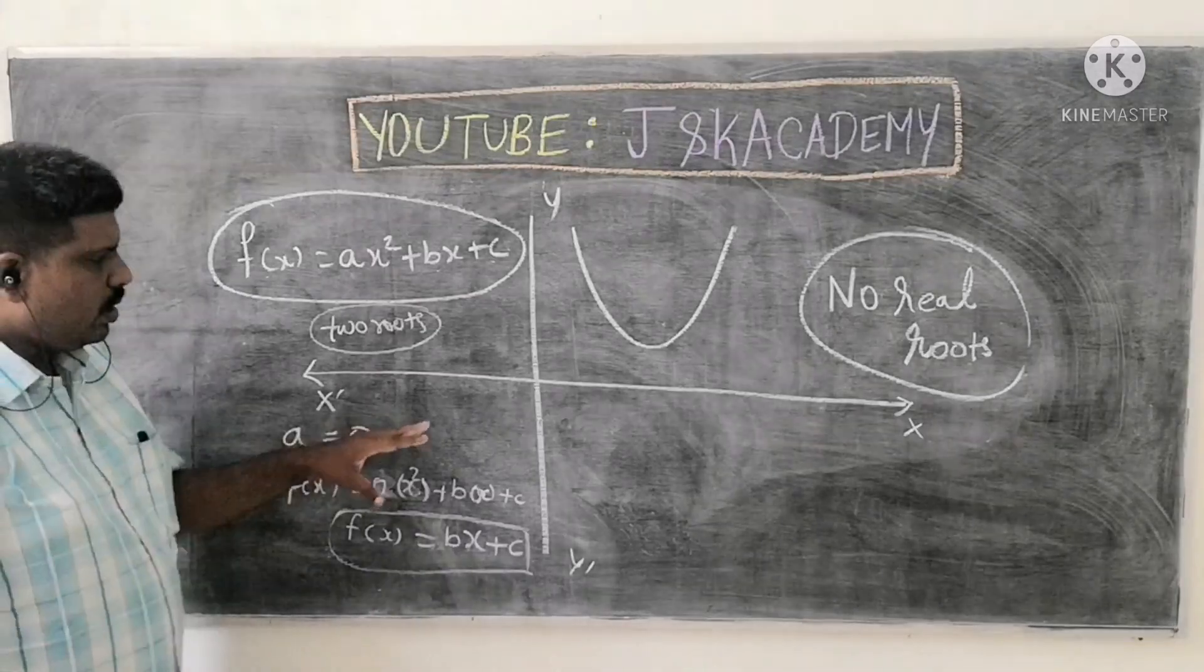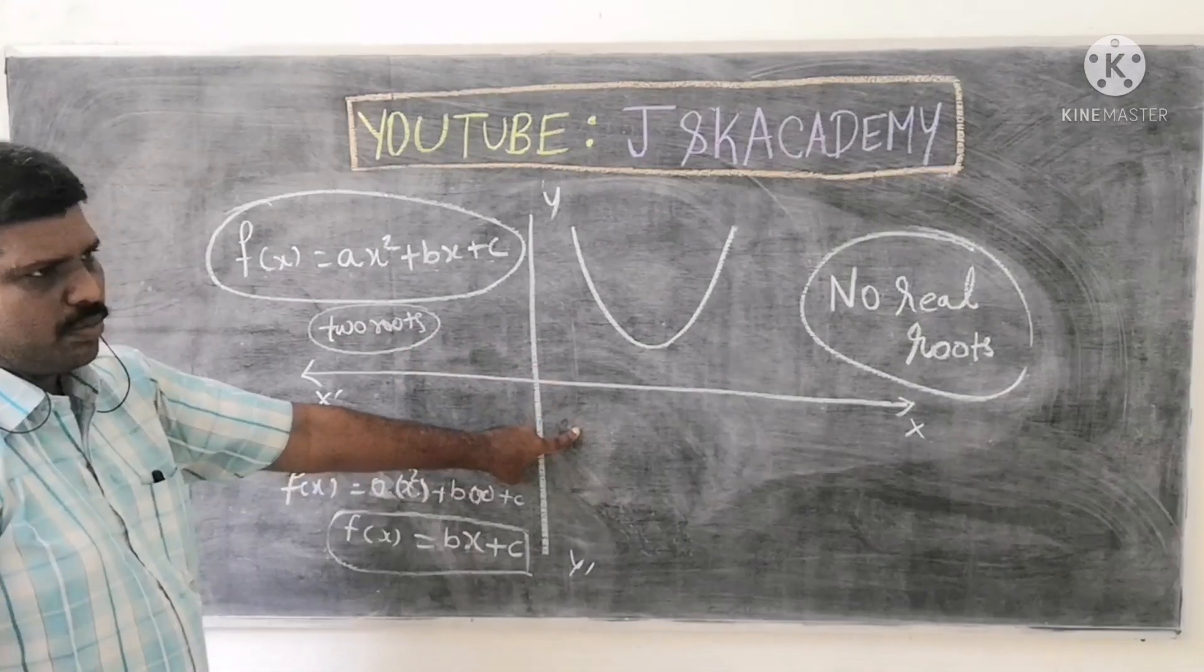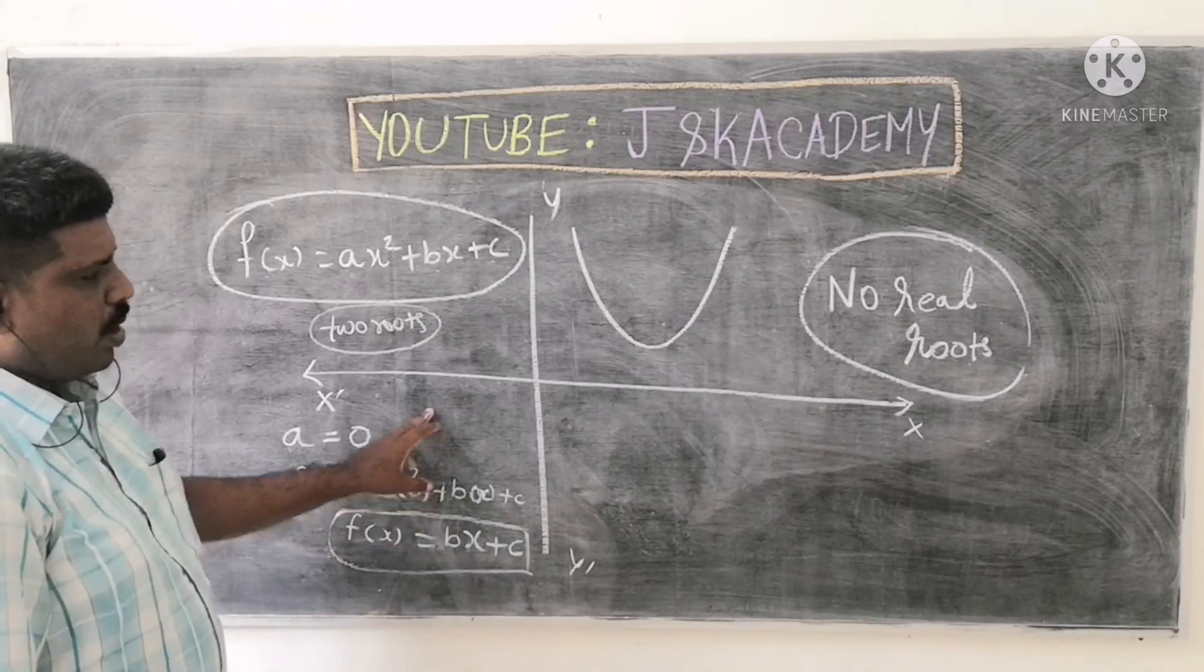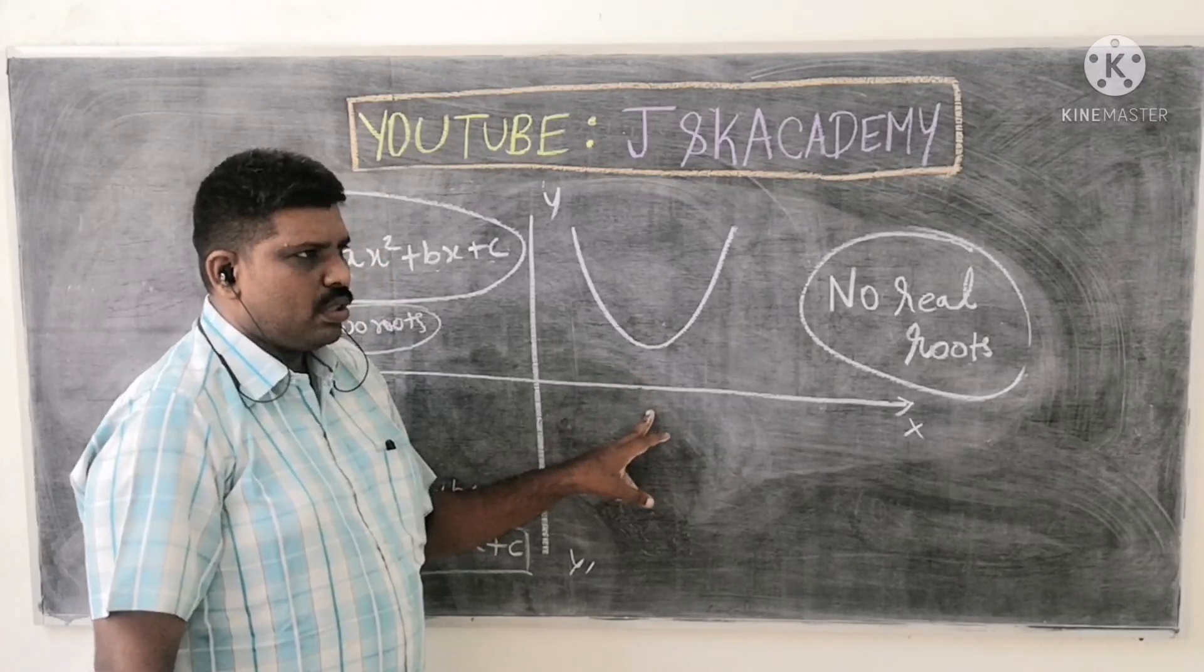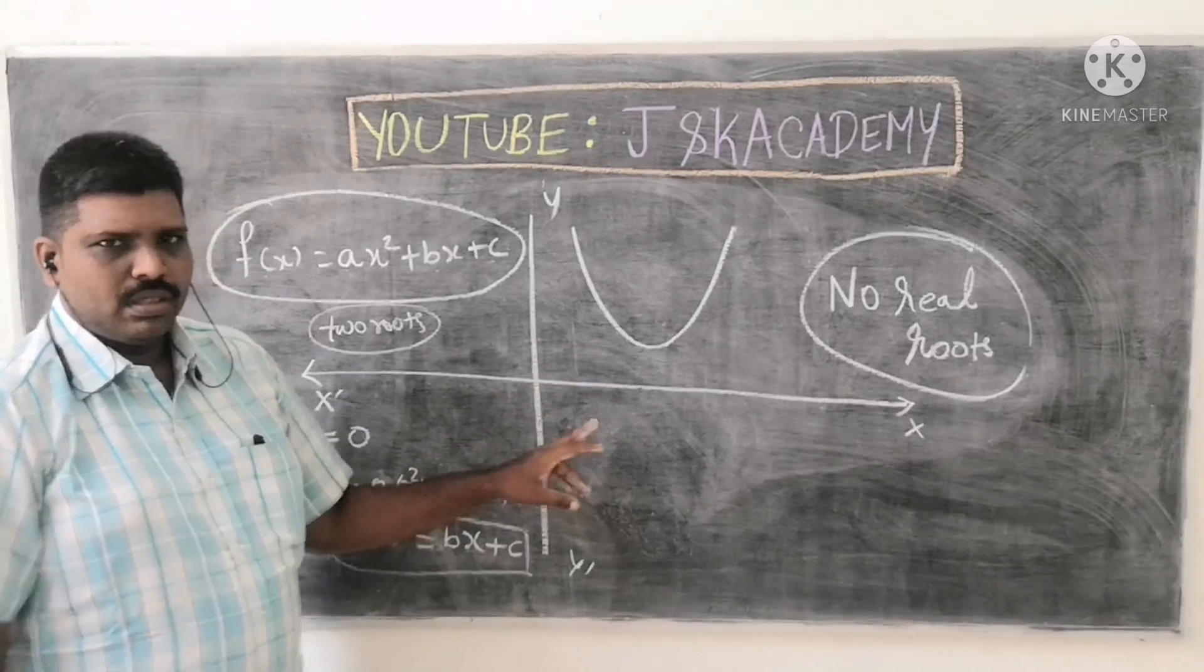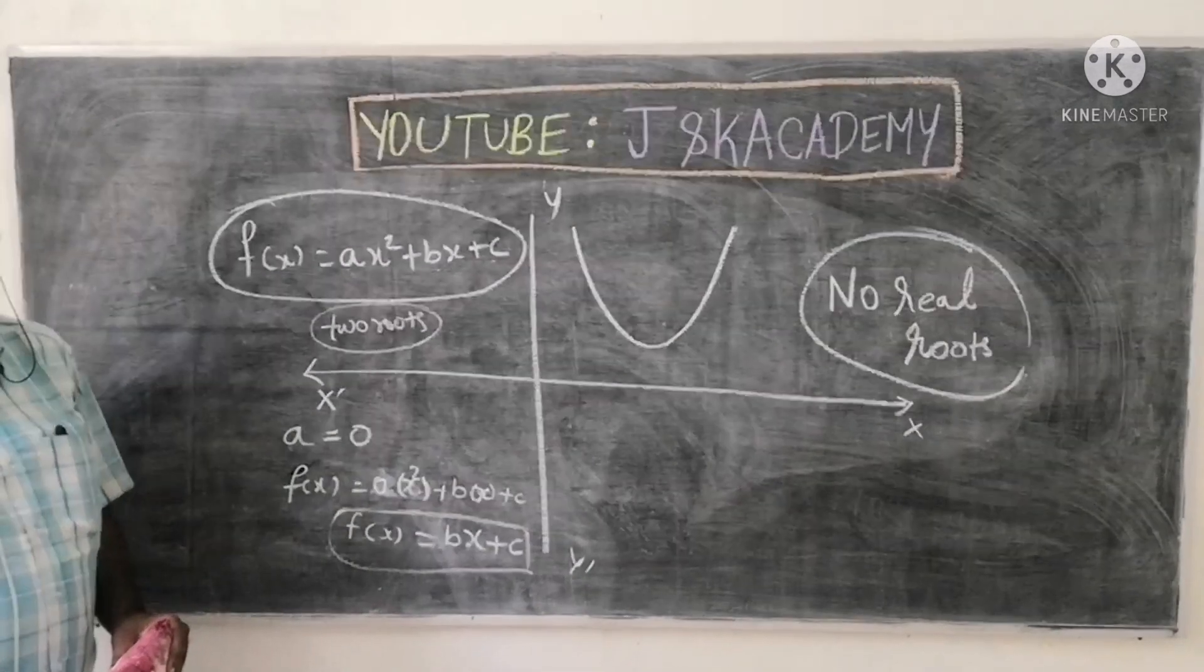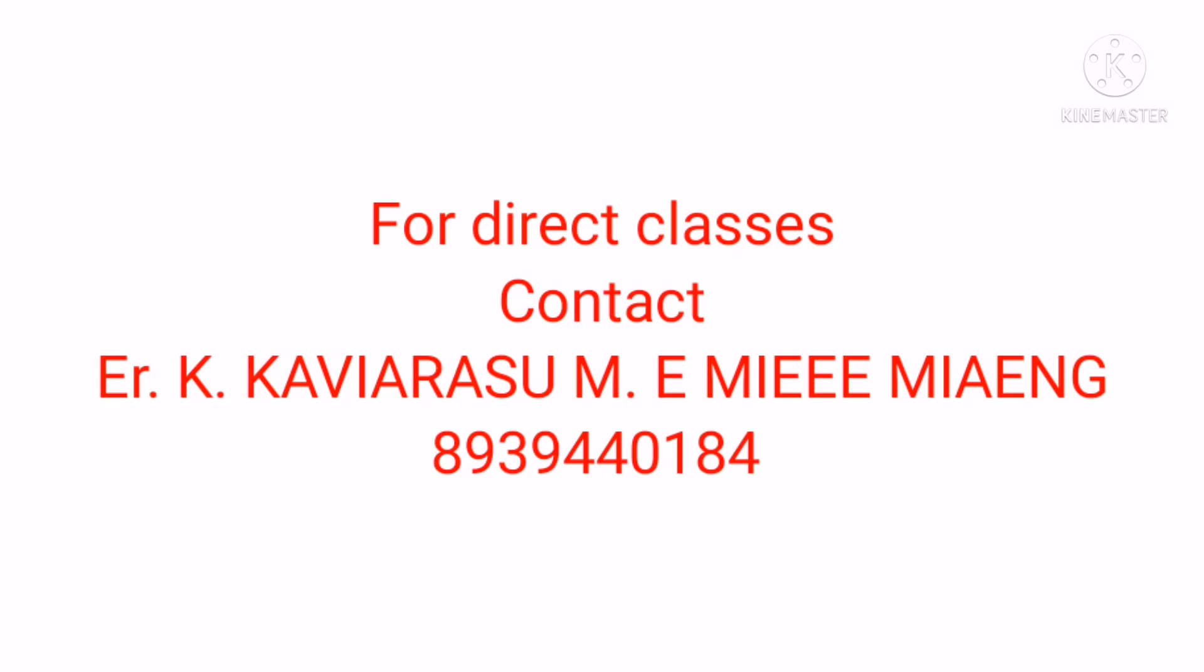Graphs first: Parabola x axis intersected, intersected roots are real and unequal roots. Parabola one point intersected, that is real and equal roots. Parabola x axis not intersected, no real roots. Okay, thank you. Two roots, two roots, one this, two roots, zero, two roots, two roots.